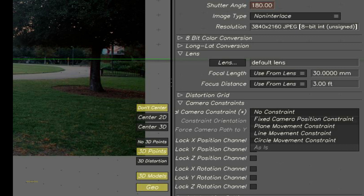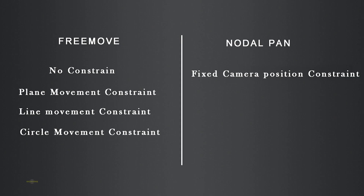Now we will see how to categorize these constraints under free move and nodal pan cam. See this chart — except for the fixed camera constraint, all the other constraints are free move, because only the fixed one doesn't have a translation value. One more major difference is that the nodal pan cam doesn't have parallax.